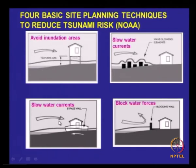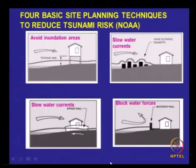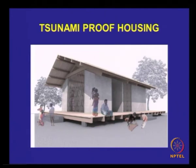Having structures on piles will reduce the forces. This is tsunami-proof housing — you see it is supported on piles. Then, tsunami-proof power plants: for example, the Kudankulam nuclear power plant, which was being discussed for several weeks or months. I am touching on this only from the technical point of view, just sharing what has appeared in the public domain.